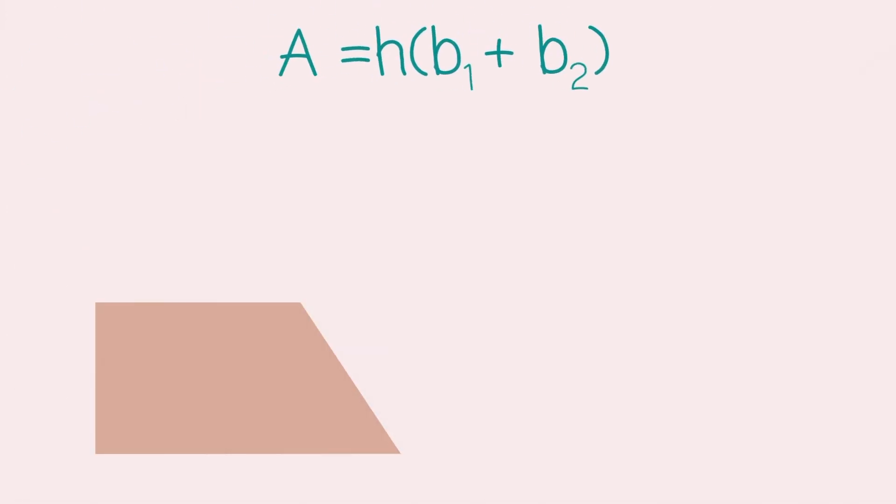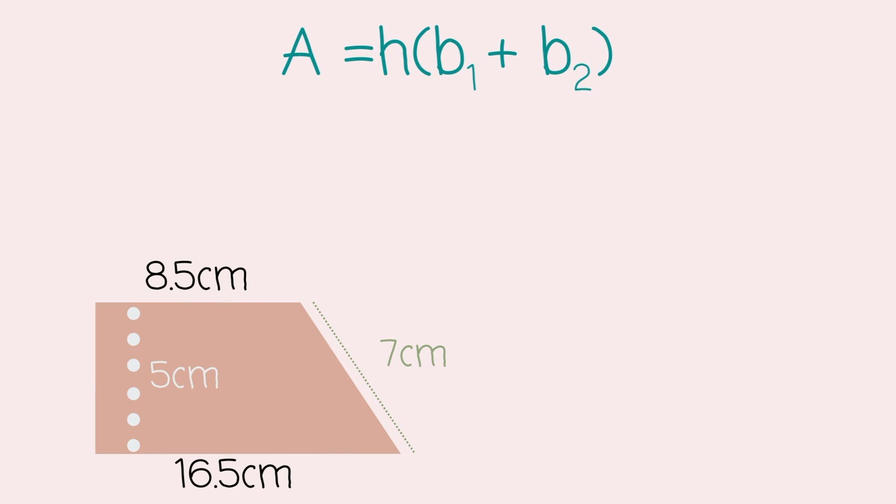Let's go into the next problem. So, different kind of looking trapezoid, but same formula. Now, notice we have the diagonal part that is labeled 7 centimeters. That is not the correct height. We cannot use that height when we're finding the area of a trapezoid.